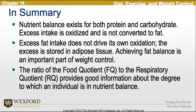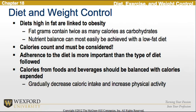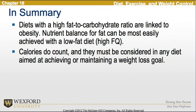Moving on to diet and weight control, diets high in fat are linked to obesity, where fat grams contain twice as many calories as carbohydrates. Nutrient balance can most easily be achieved with a low-fat diet. Calories count and must be considered, and adherence to the diet is an important factor. The calories from food and beverages should be balanced with calories expended, gradually decreasing caloric intake and increasing physical activity. Diets with a high fat-to-carbohydrate ratio are linked to obesity, and nutrient balance for fat can most easily be achieved with a low-fat diet or a high FQ.